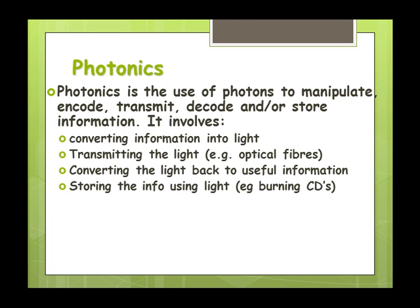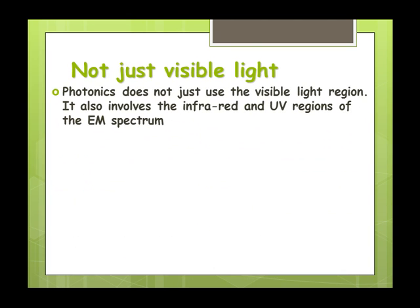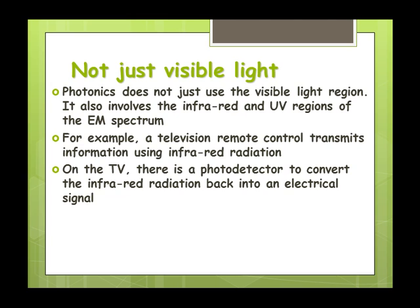Now photonics doesn't just include the visible light spectrum. Often we're using things outside that, infrared and UV regions in particular. The television remote, we're using infrared radiation to send that information from one place to the other. On the TV, we have a photodetector, something that's going to detect that information and convert that back into an electrical signal so that the TV knows what it's supposed to do.